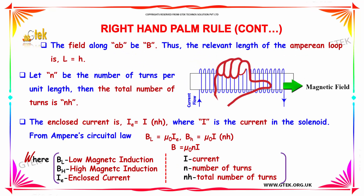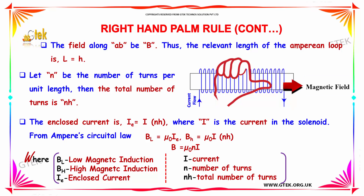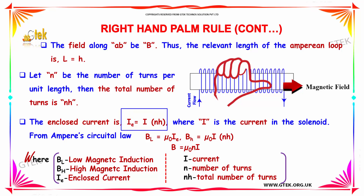Further, moving the field along AB, considering from A to B, it's B — that's the magnetic field. Thus the relevant length of the Ampere loop is L equal to H, where N is the turns. The total number of turns is N into H. The enclosed current I is equal to I into N into H, where I is the current in the solenoid.